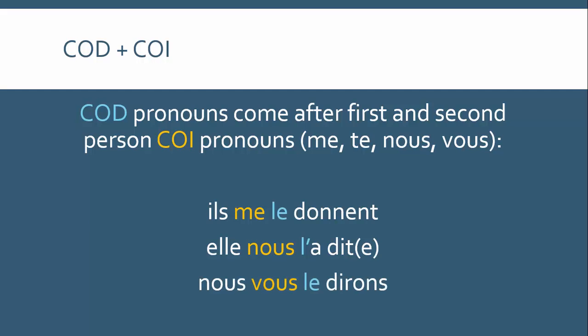And 'nous vous le dirons' — we will say it to you. Here 'vous' is a second person plural indirect object pronoun, and it comes before the direct object pronoun 'le': we will tell it to you.